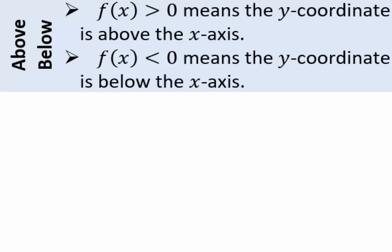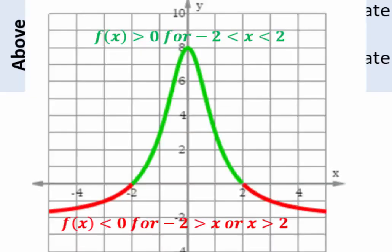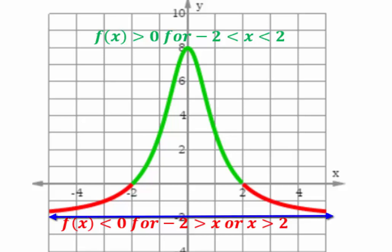A function value greater than 0 means the y-coordinate is above the x-axis; a function value less than 0 means the y-coordinate is below the x-axis. In this example, when x is between negative 2 and 2, the green part of the function is above the x-axis. For x values less than negative 2 or greater than 2, the red part of the function is below the x-axis. Exactly at x equals 2 and negative 2 you have x-intercepts, and when x is 0 the y-intercept is 8. Y equals negative 2 is the horizontal asymptote as x goes to plus or minus infinity.